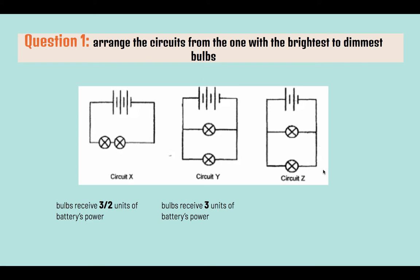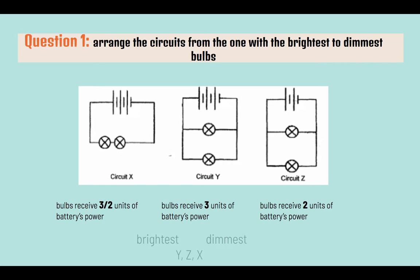Lastly, for circuit Z, there are only 2 batteries, so there are only 2 units of battery power. And because this is a parallel circuit, with more than one path for electric current to flow through, the battery power need not be shared, and each bulb will receive 2 units of the battery's power. Hence, the circuit with the brightest bulb is Y, followed by Z, and then X.